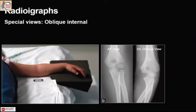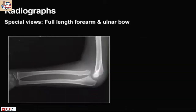For special views like internal oblique, pronate the forearm and internally rotate about 20 degrees — this applies when looking at a lateral condyle fracture. The same applies for the medial side with external rotation. Sometimes just an elbow x-ray isn't enough; you need the full length of the forearm. What is obvious in this case is a radiocapital dissociation, but if we take only the elbow x-ray we might miss what's happening to the ulna, so always look at the full length to check the ulnar bow.